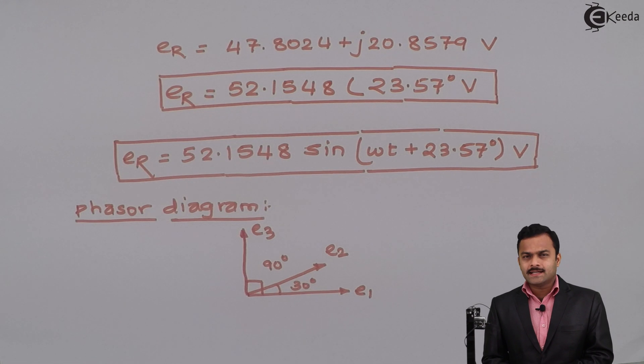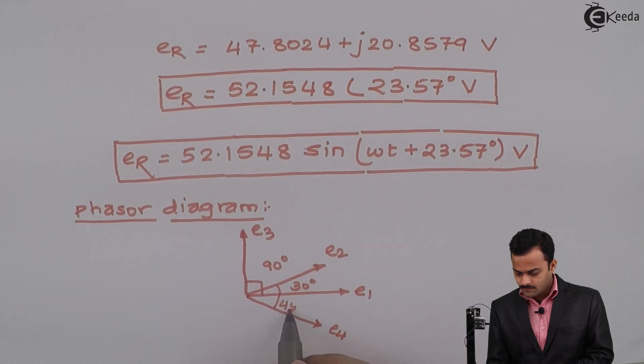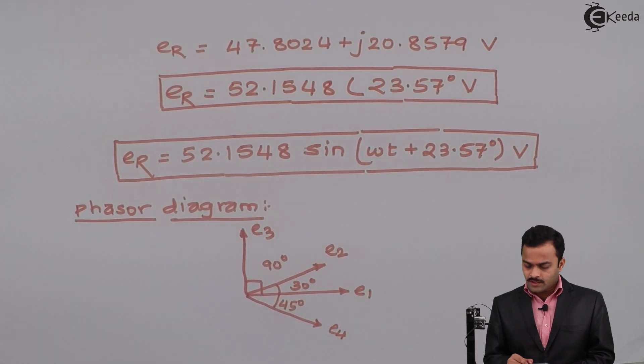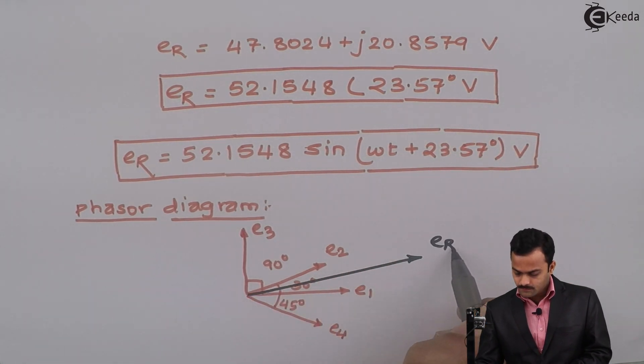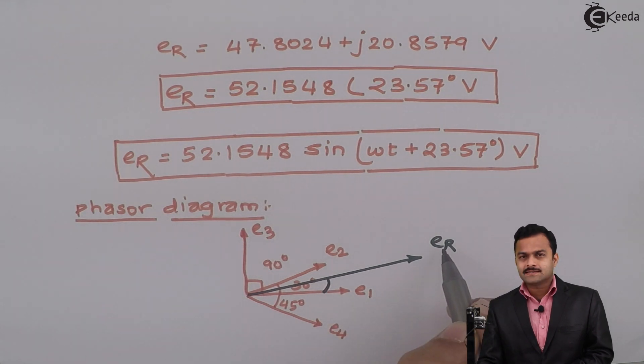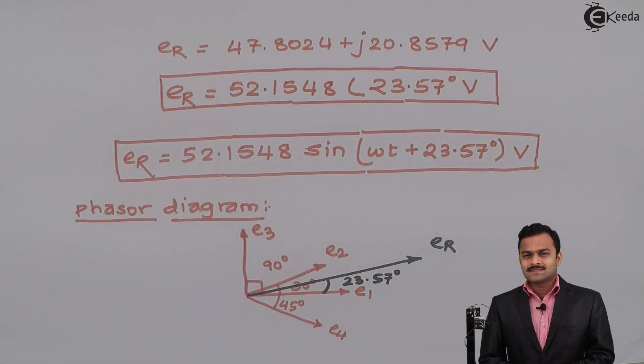E4 is 20 at an angle -45 degrees, so minus means in a clockwise direction making angle 45 degrees. And what resultant we got: 52.1548 at an angle 23.57 degrees, so it will be like this with the positive x-axis, and the angle made by this ER with the positive x-axis is 23.57 degrees. So this is how we can represent any sinusoidal quantity as a phasor and using phasors we can get a resultant phasor out of it. Thank you.